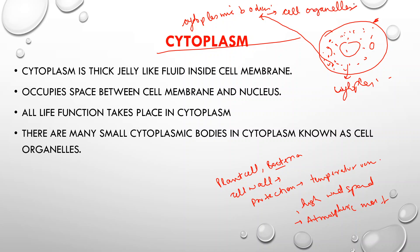There are two types of cells. One is prokaryotic and the other is eukaryotic. Prokaryotic cells neither contain a well-defined nucleus nor any internal membrane that is connected to the plasma membrane.